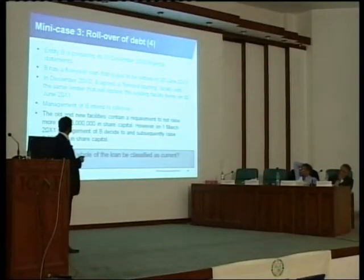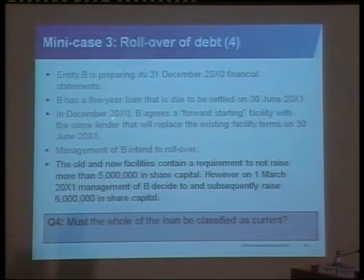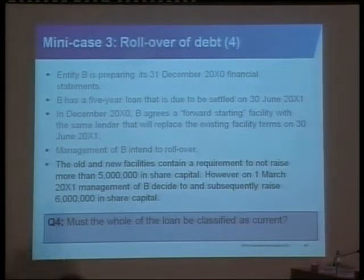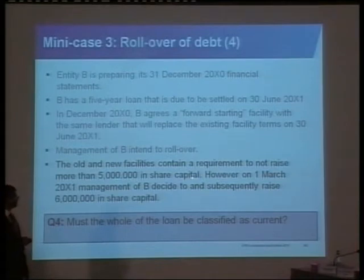Entity B is preparing its 31st December financial statements. There is a five-year loan that is due to be settled in six months' time. In December, it agrees a forward-starting facility with the same lender that will replace the existing facility terms on 30th June. They intend to roll over. The old and new facilities contain a requirement in the contract to not raise more than five million in share capital.